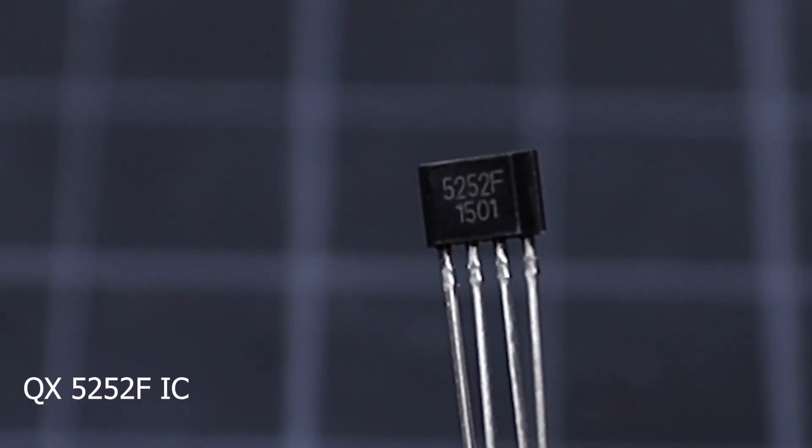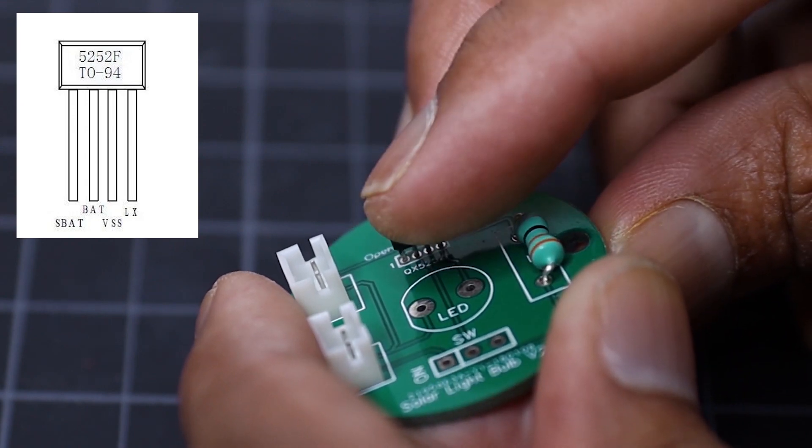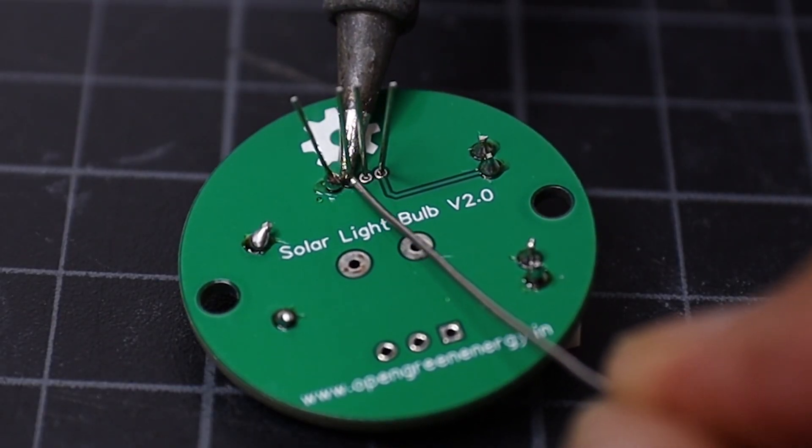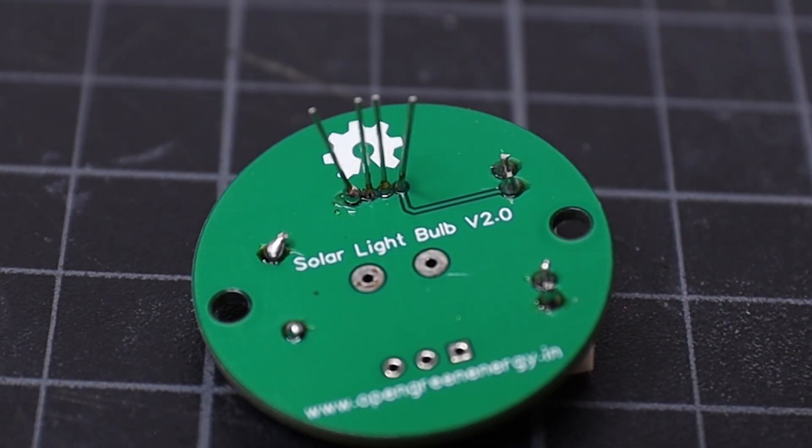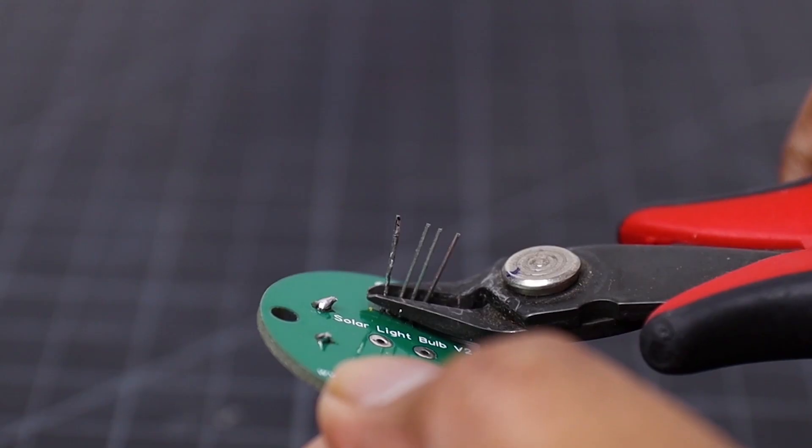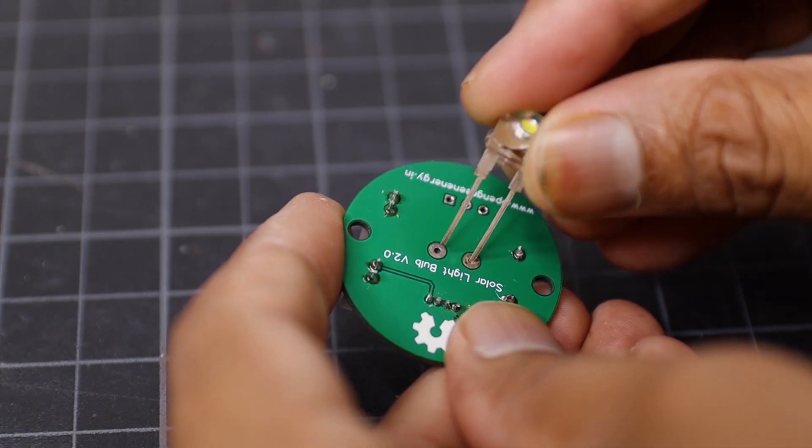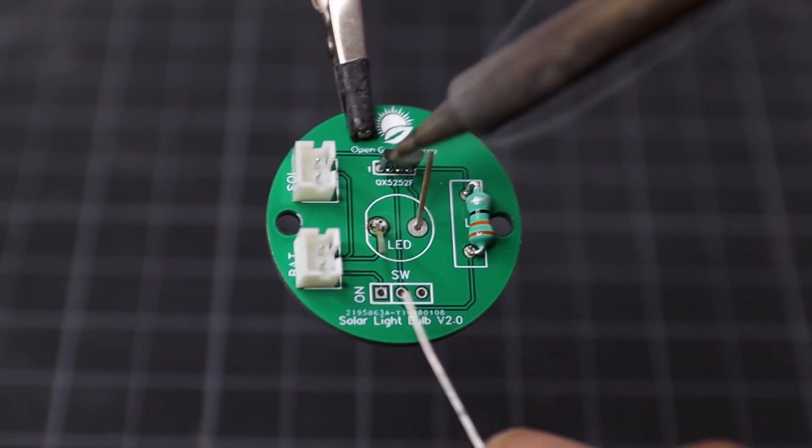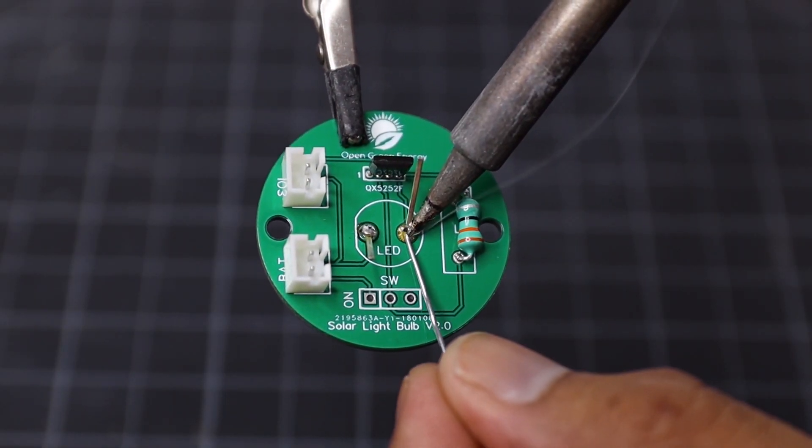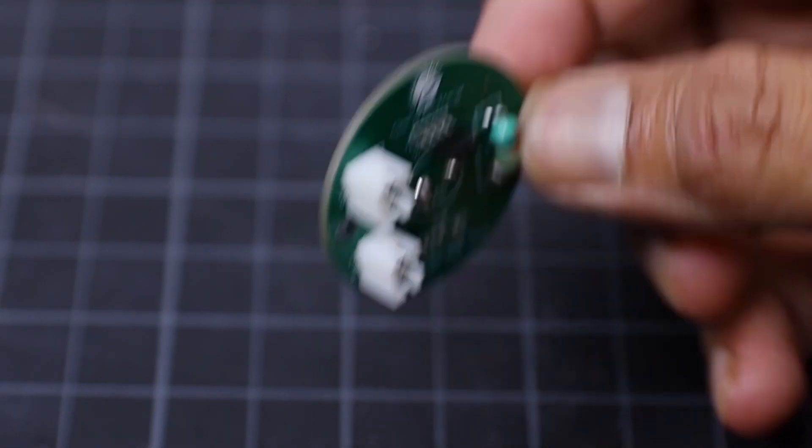The next component that I am going to solder is QX5252F. You can refer the picture for pinout. Now solder the 8mm straw hat LED on the back side of the PCB. The longer leg of the LED indicates the positive terminal. Now the PCB is ready for connecting the solar panel and battery.